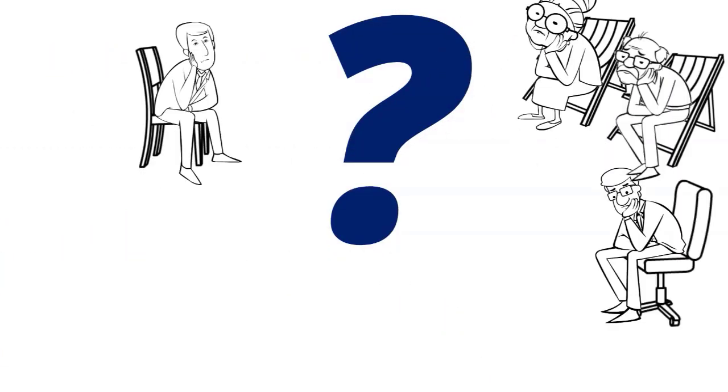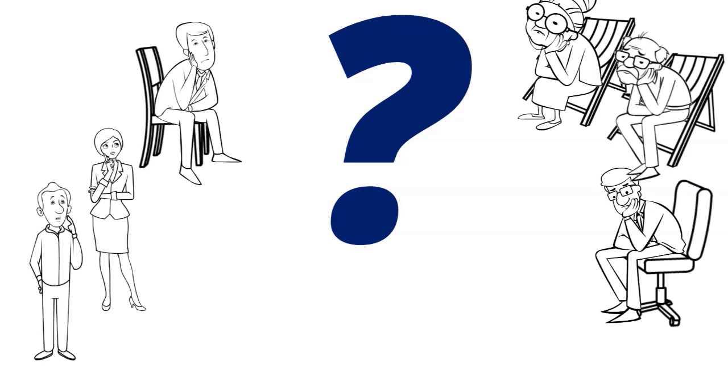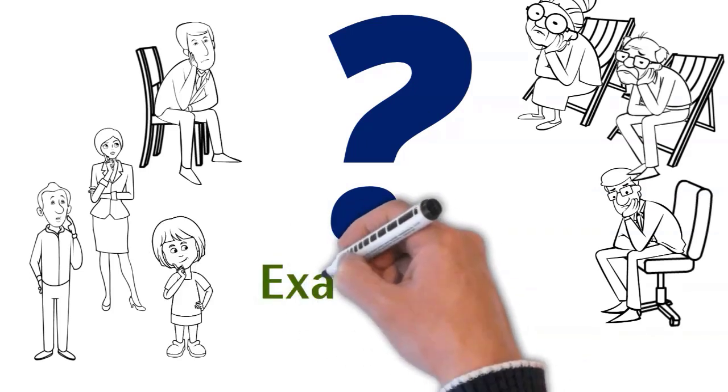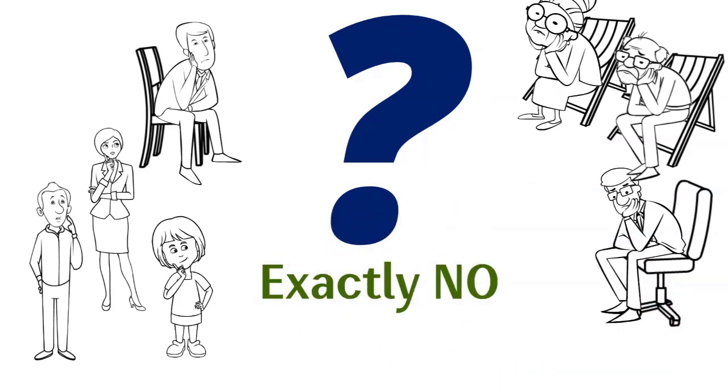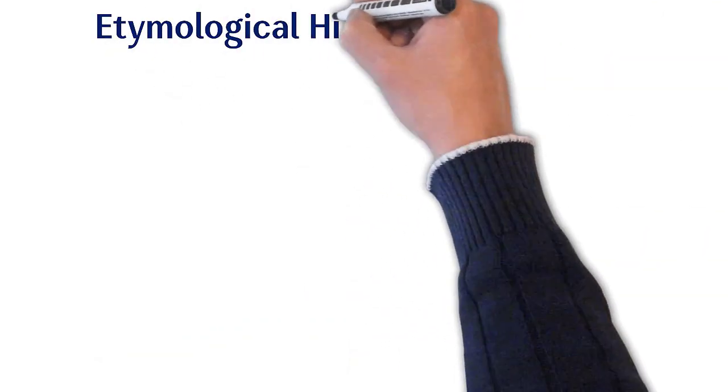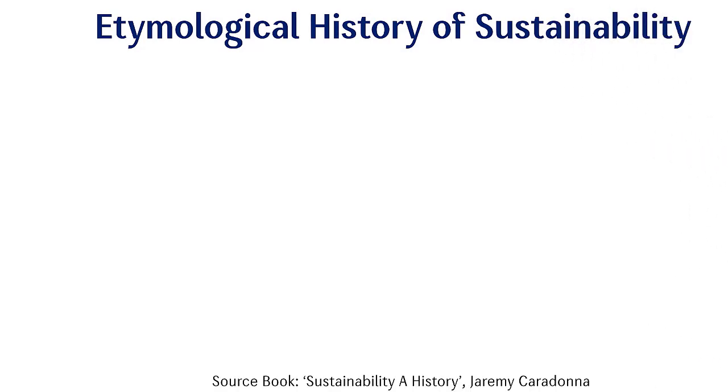But does this guide us to choose our everyday actions whether they are sustainable or not? Well, exactly no. It requires some more efforts. We will deal with that in our coming videos. Now let's see etymological history of sustainability, means how the word came into existence.